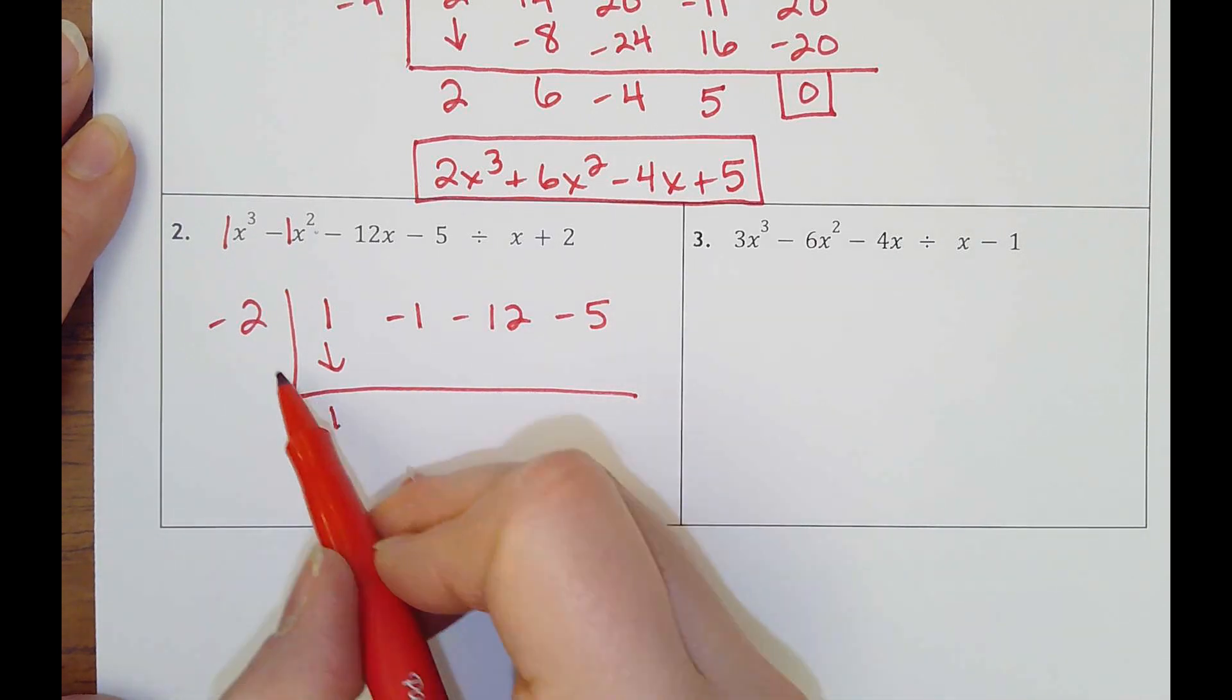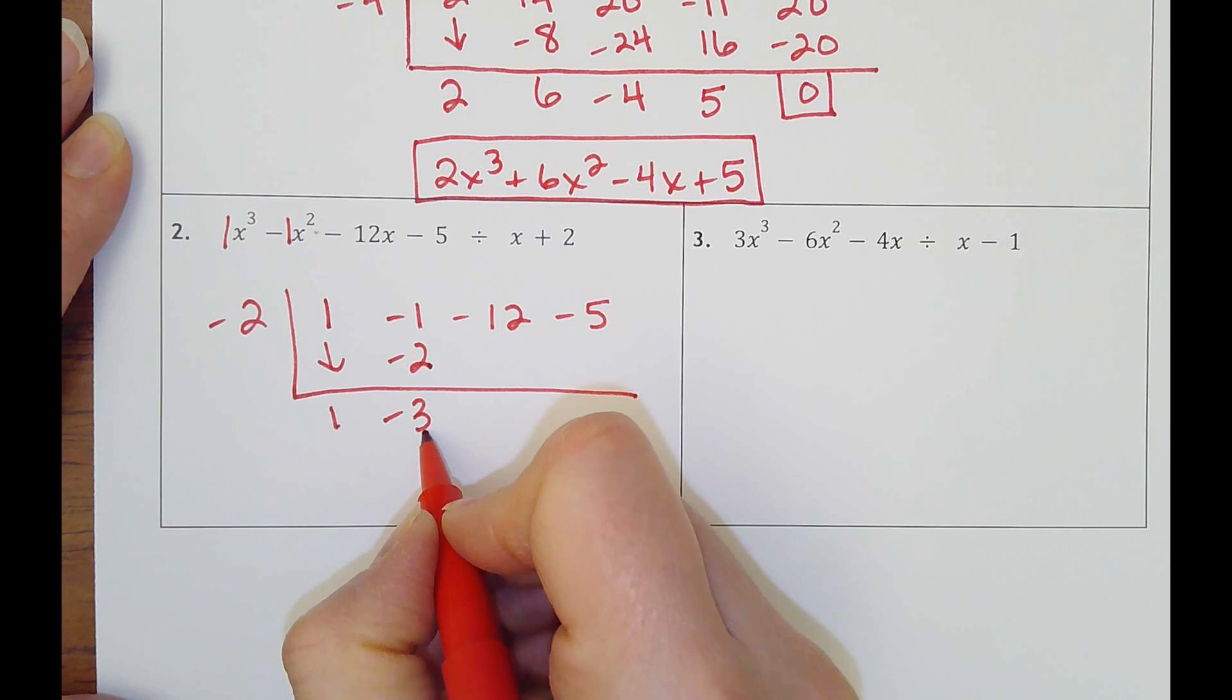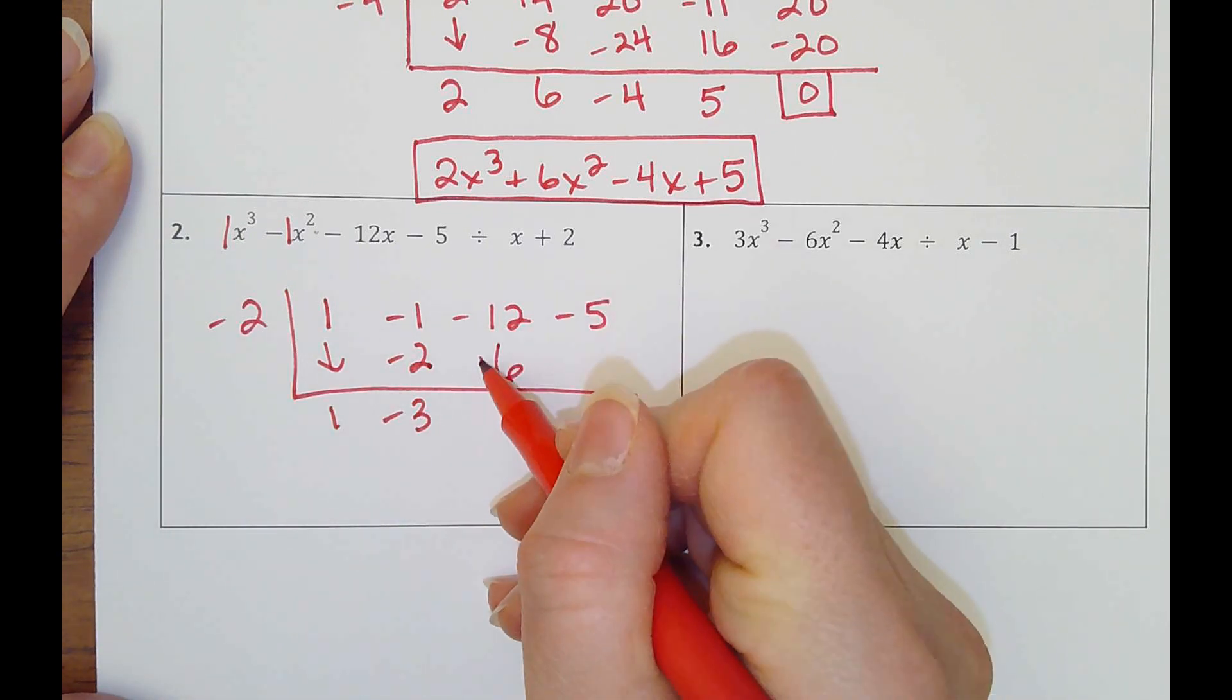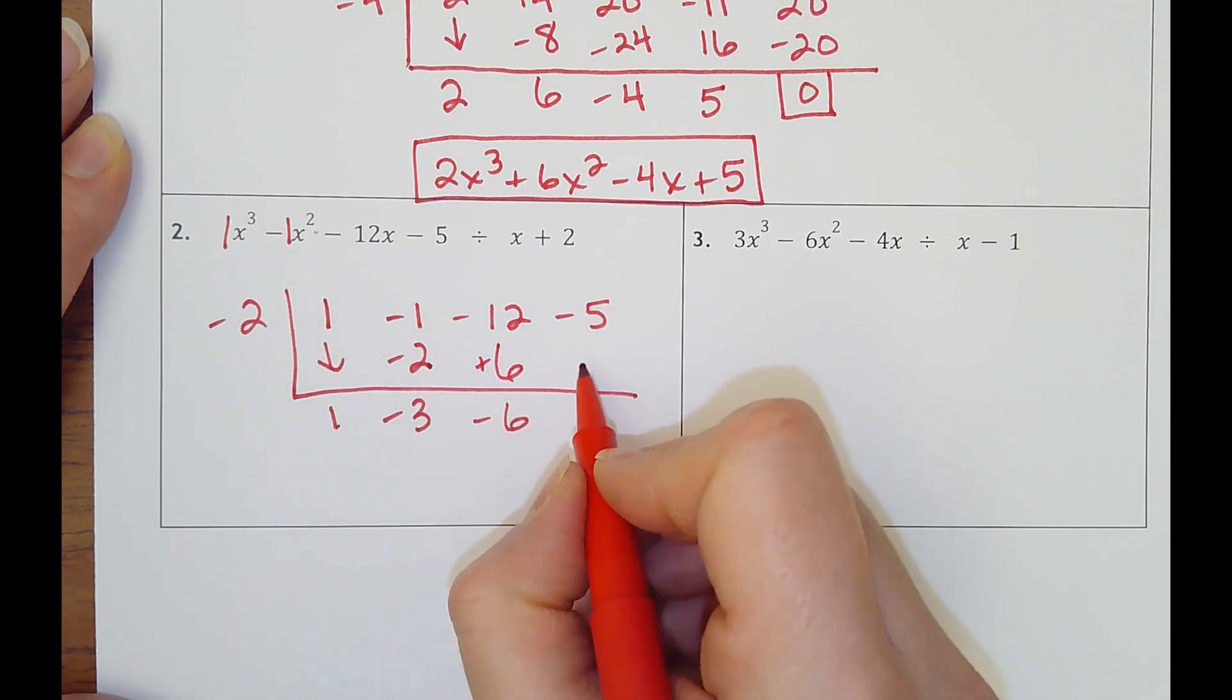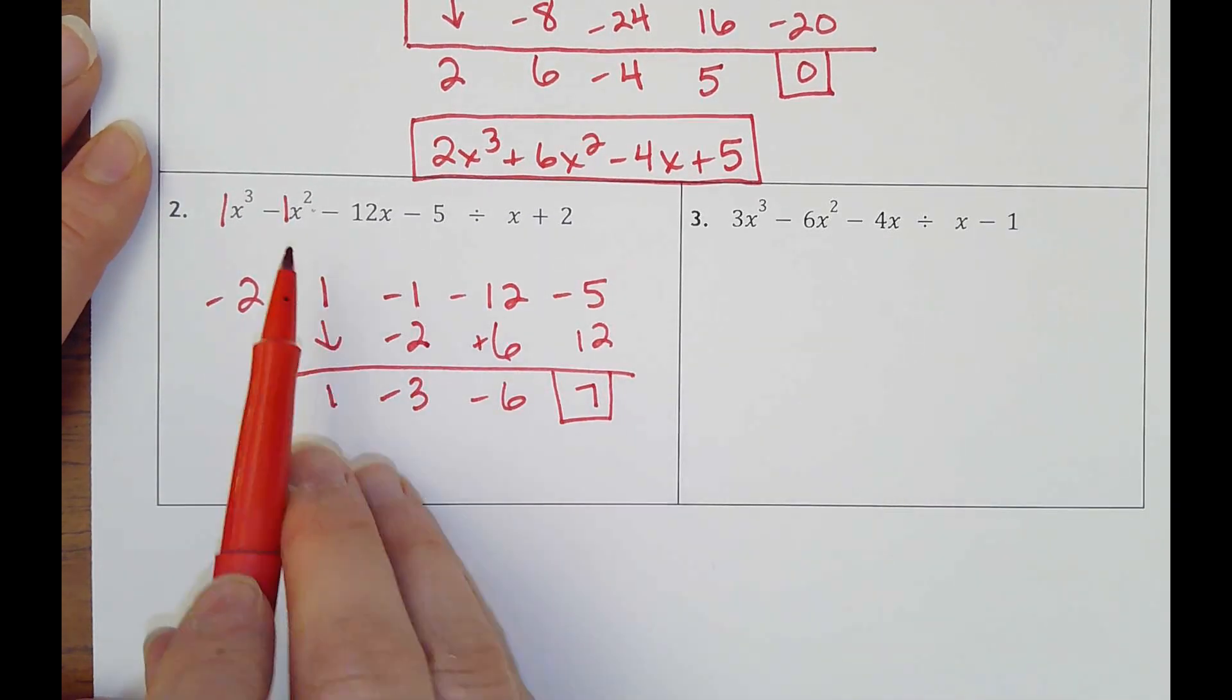Start by dropping down the first number. 1 times negative 2 is negative 2. Negative 1 minus 2 is negative 3. Multiply negative 3 times negative 2 is 6. Negative 12 plus 6 is negative 6. Negative 6 times negative 2 is 12, that leaves me with a remainder of 7.